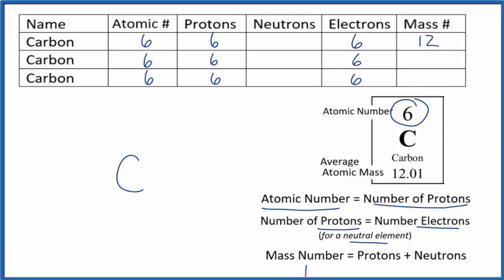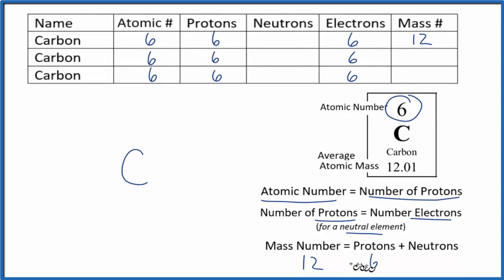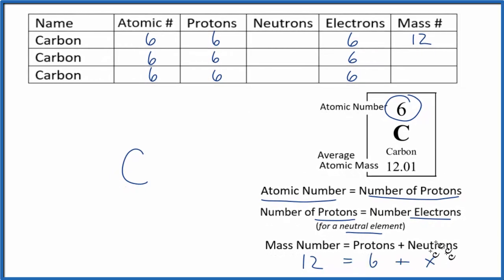That means if they have a mass number of 12, we know they have six protons. Then to figure the neutrons out, something plus six equals 12. Six neutrons. Turns out 98.9% of carbon atoms have a mass number of 12, so they have six neutrons.